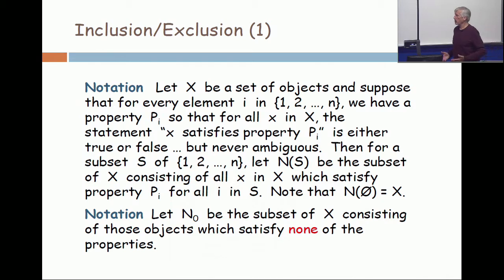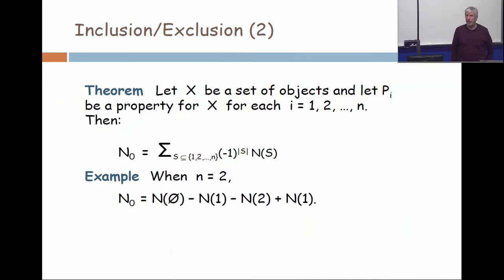So these are the kinds of situations that we're talking about. We have a set of objects, and then we have a bunch of properties, usually not one property—that's not very interesting—usually a lot of properties. And so we want to get an inclusion-exclusion formula, and it's a trivial formula.